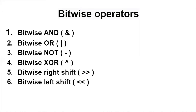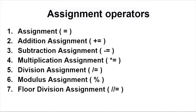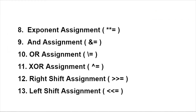Next we have bitwise operators. There are six bitwise operators in Python: bitwise AND (represented by &), bitwise OR, bitwise NOT, bitwise XOR, bitwise right shift, and bitwise left shift. Then we have assignment operators — there are 13 assignment operators in Python: assignment, addition assignment, subtraction assignment, multiplication assignment, division assignment, modulus assignment, floor division assignment, exponent assignment, AND assignment, OR assignment, XOR assignment, right shift assignment, and left shift assignment.